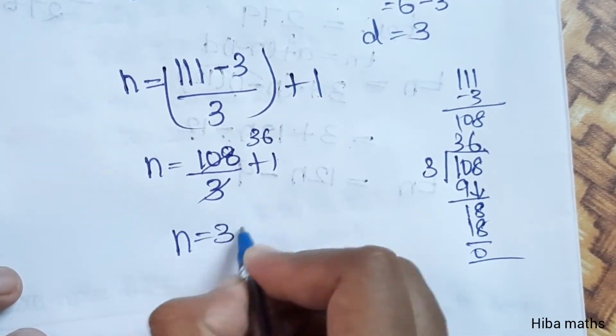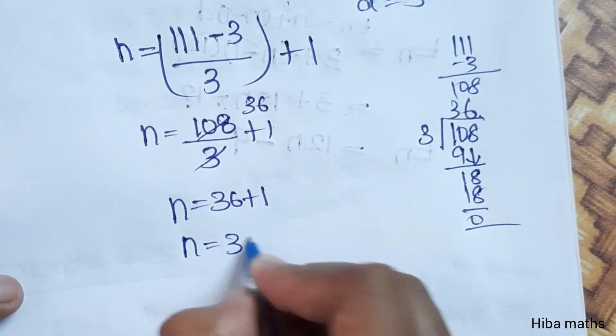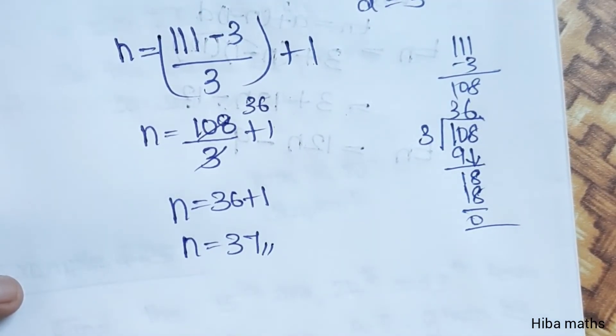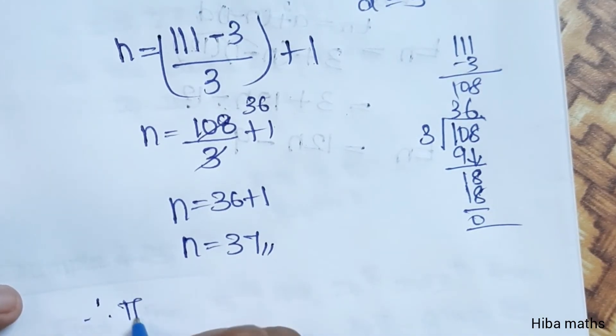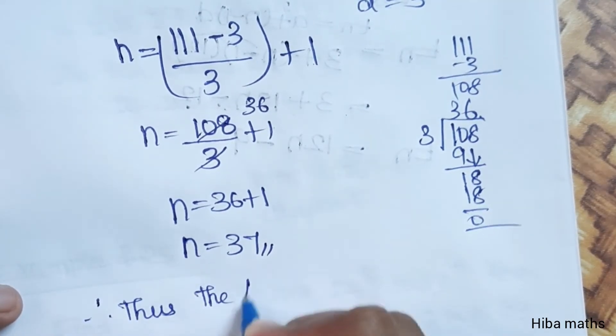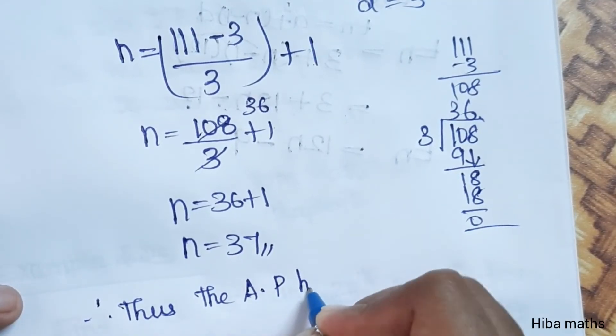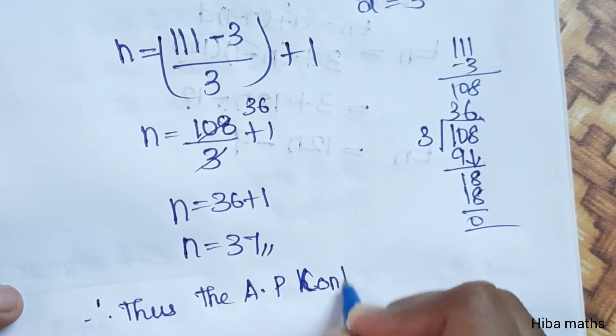So n value is 36 plus 1. Therefore, n equals 37. There are 37 terms in this AP.